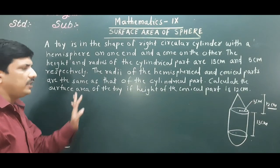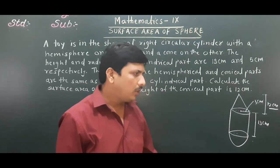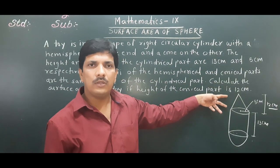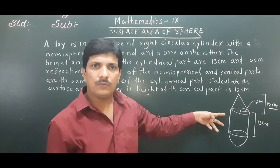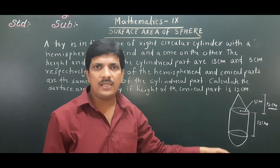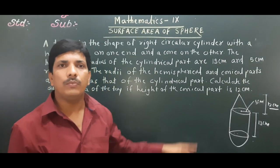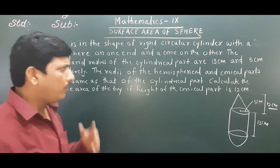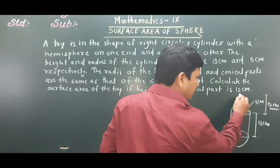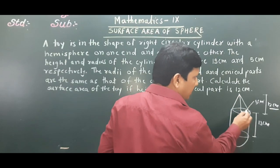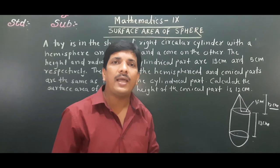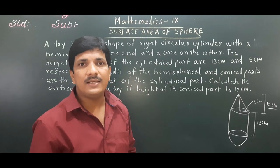We need to find the total surface area of the toy: CSA of cone + CSA of cylinder + CSA of hemisphere. First, we must find the slant height of the cone. Radius r = 5 cm, height of cone h = 12 cm.